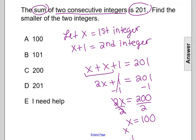The second integer we can find by adding 1 to x. So that will give us x plus 1. We know now x is 100, so 100 plus 1 equals 101.